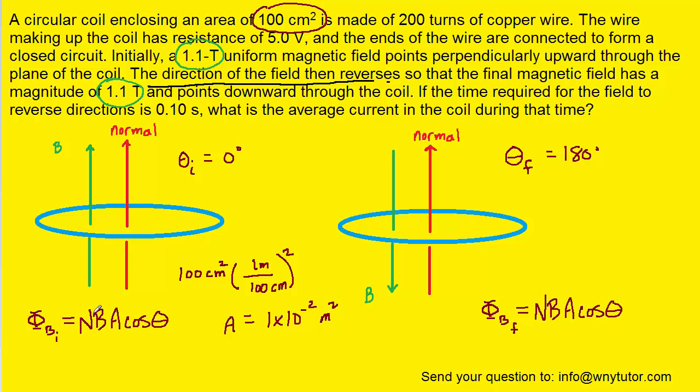And then n, the number of turns in the coil, was given to us as 200, so that's relatively straightforward. We can go ahead and plug in all the values for the initial flux as well as the final flux.